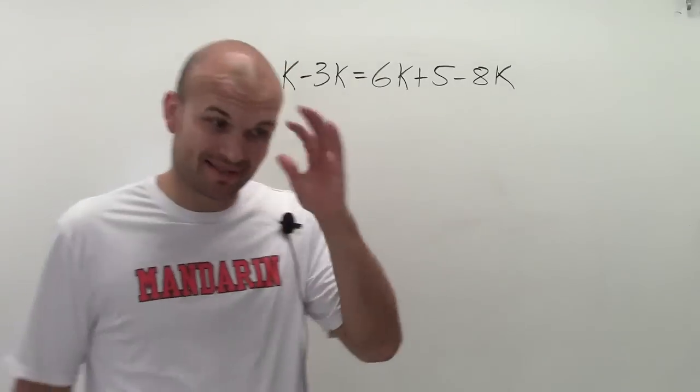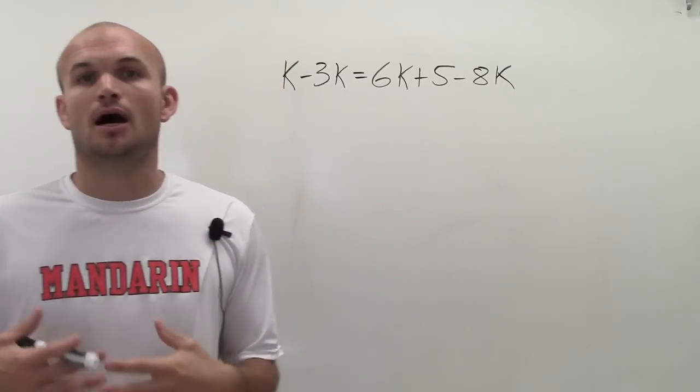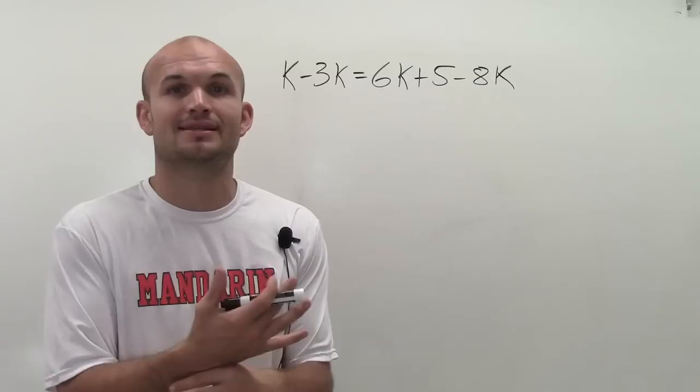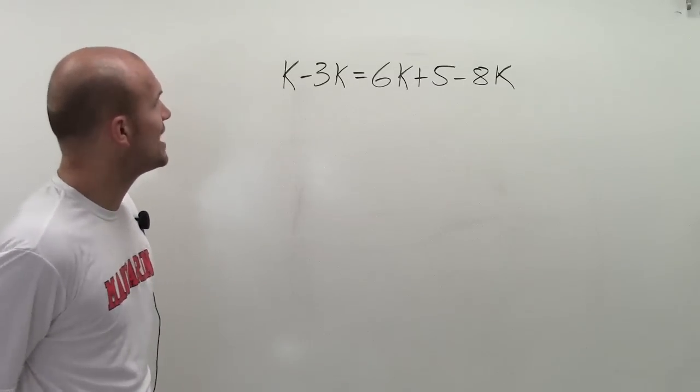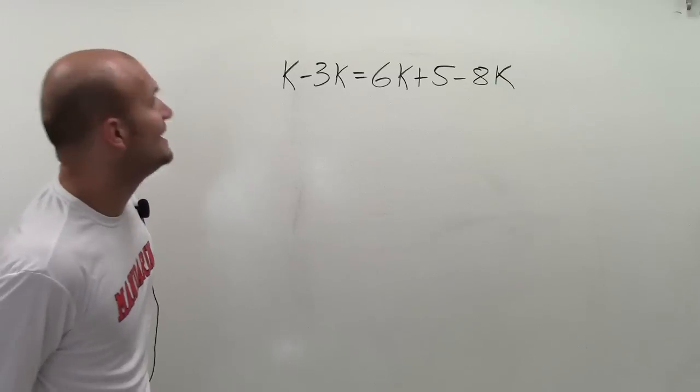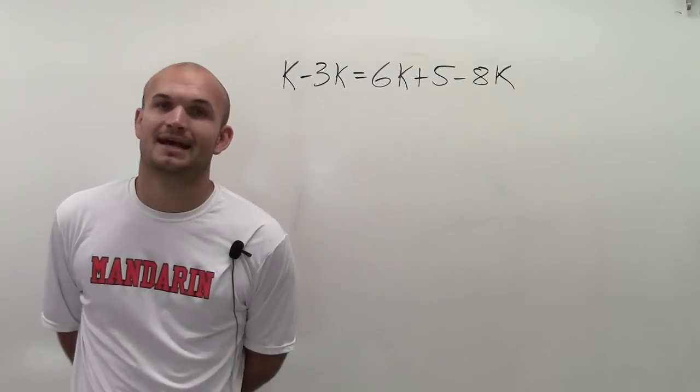This is a great problem, an excellent problem to really make sure that you have a full grasp of everything we've been talking about as far as solving for your variable. Here I have k minus 3k equals 6 times k plus 5 minus 8 times k.